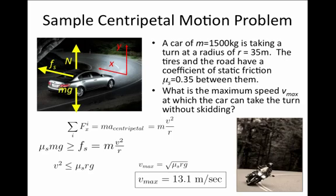Of course, we know in many cases we've seen cars and motorcycles take turns at much higher speeds, and that's because we've used a rather worst case scenario when the static force of friction is only 0.35 and we have a rather small radius of curvature of 35 meters.